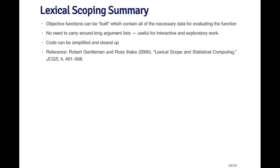The nice thing about lexical scoping in R is that if you're doing minimization or optimization of some sort, you can build these objective functions which contain all the necessary data and other things required to evaluate that function into the enclosing environment, so that when you call the objective function you don't need to specify the data and all those other things every single time. They're built into the environment and will be automatically looked up in the right place. You don't have to carry around these long argument lists, which can be very useful for interactive and exploratory work like making these plots, and the code can be very simple and clean.